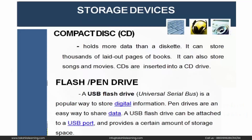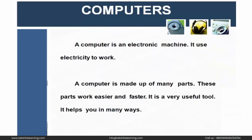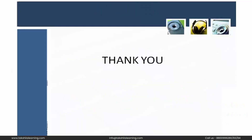Computer is an electronic machine that works with the help of electricity. A battery can also be used, but electricity is needed to charge the battery. Without electricity, a computer cannot work. A computer can calculate data, store data, manipulate data, and perform several tasks at a time. It saves both time and energy. Thank you.